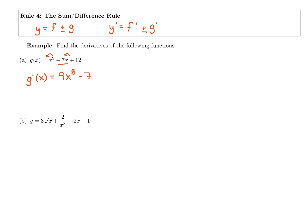The last term is plus 12, which doesn't have an x on it. That was our very first rule: the derivative of every constant is just zero. So you can write plus zero at the end, but you don't need to. The derivative of x to the ninth is nine x to the eighth, derivative of negative seven x is negative seven, and derivative of 12 is zero. The sum and difference rule just says make sure you take the derivative of every term.